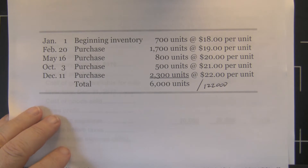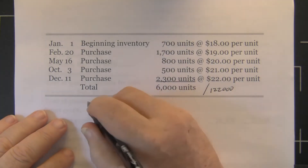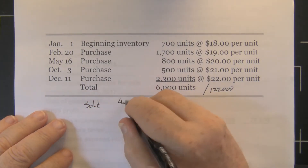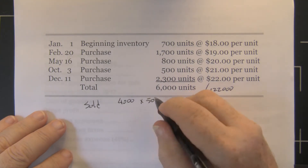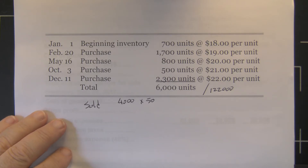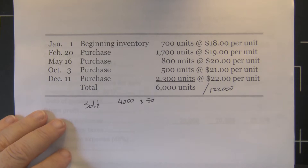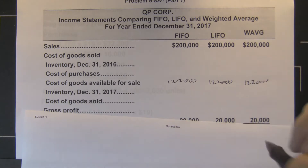During the year we sold 4,000 units at $50 per unit. Keep in mind, as we talked about before, it doesn't really matter what costing method you use when you're selling the goods — you use that price, and that's the same price for everybody. So we sold $200,000 worth of units, and it doesn't matter if it's LIFO, FIFO, or weighted average.